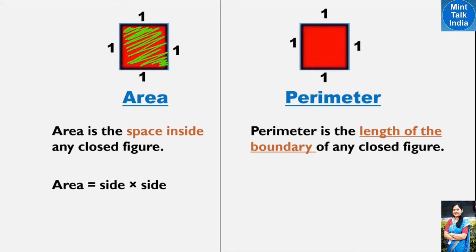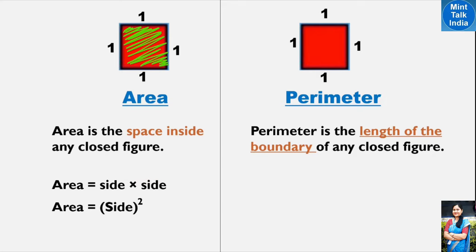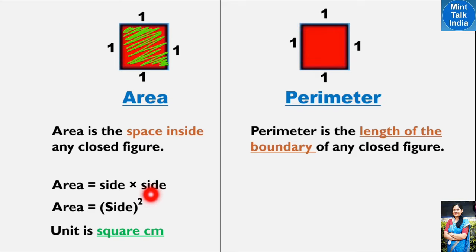If we write the side multiplied two times, we can write it as the square of the side, meaning we are multiplying the side by itself. When we write the answer, we write the unit as square centimeter. Square means the side raised to the power of two.